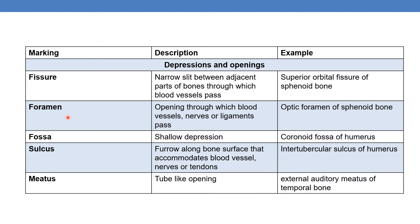Next is foramen — an opening through which blood vessels, nerves, or ligaments pass. Unlike a fissure, which is a narrow slit, a foramen is a distinct opening. An example is the optic foramen of the sphenoid bone.